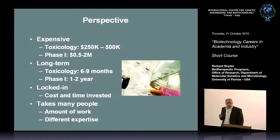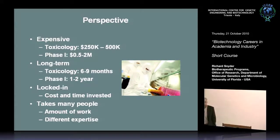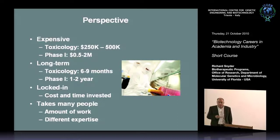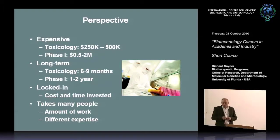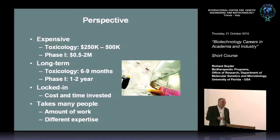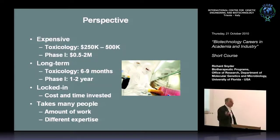The perspective is that this is very expensive. Toxicology costs upwards of half a million dollars. A Phase 1 human clinical trial averages at least a million dollars, probably more like two million. It's long-term — as a scientist you're used to getting answers fast, but here the cycle is measured in years and months. If a commitment were made today to take a gene to the clinic, it wouldn't go into a human being for probably 18 months to 2 years, if you had the money today.